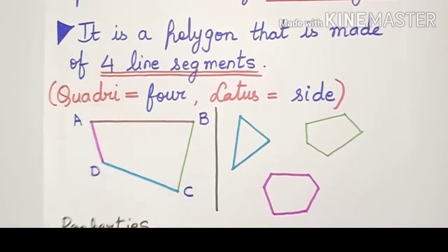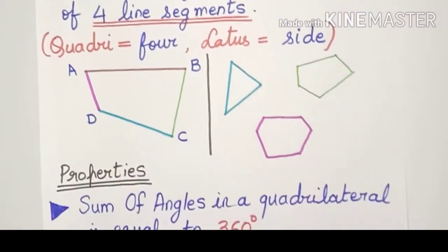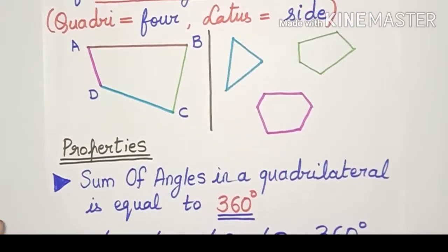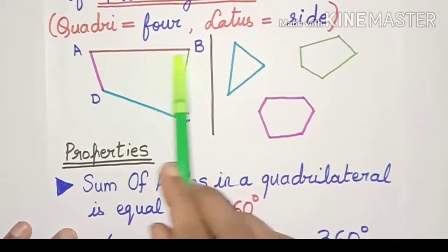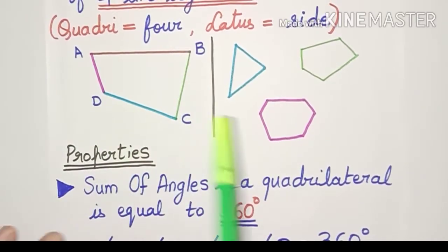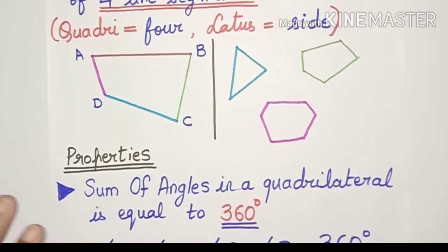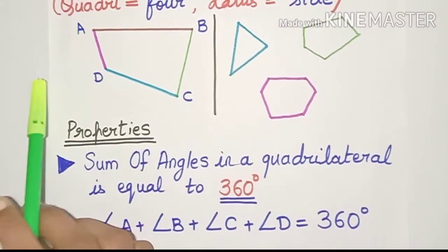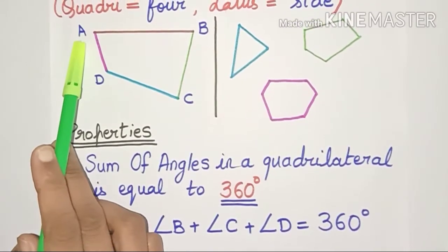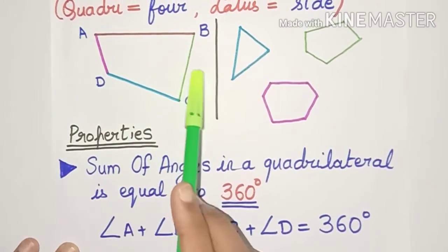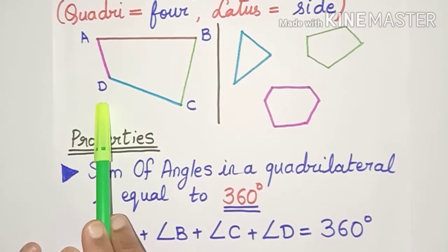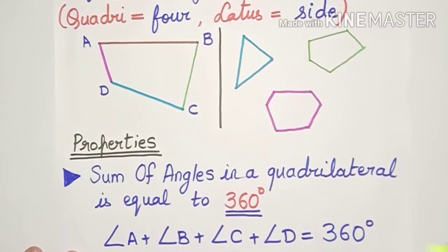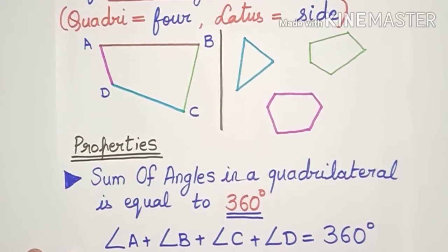Now coming to the properties of a quadrilateral, the most important property is that the sum of angles in a quadrilateral is always 360 degrees. So in this figure, angle A plus angle B plus angle C plus angle D will always be 360 degrees.